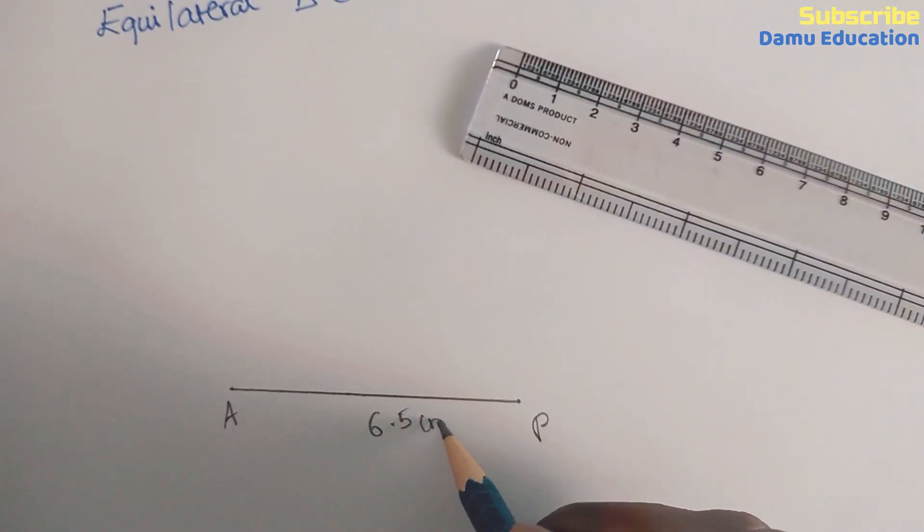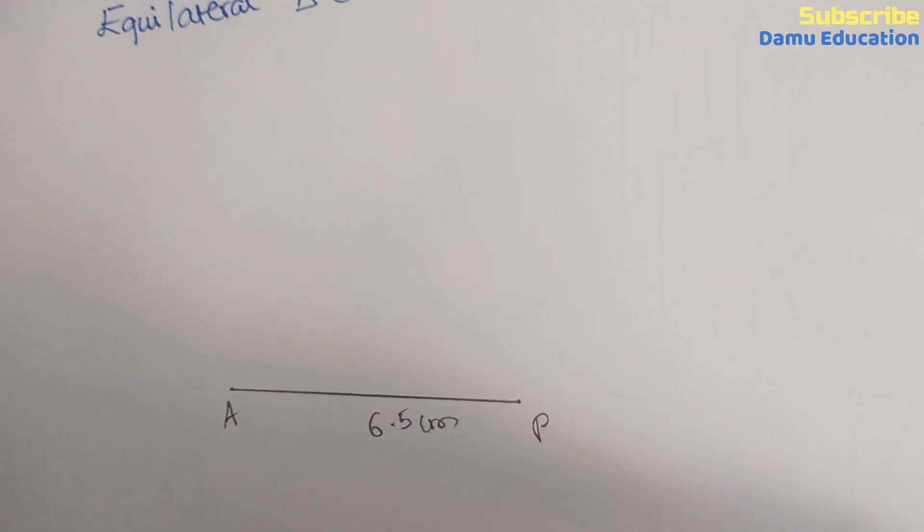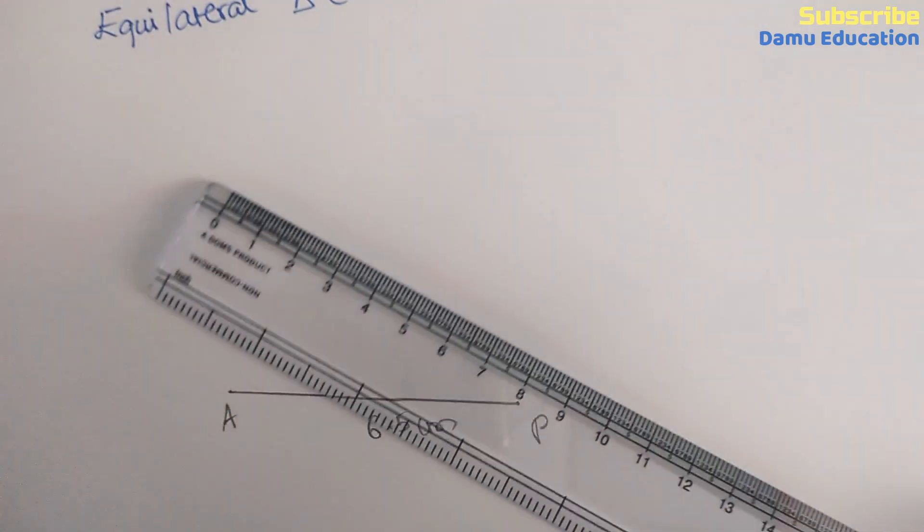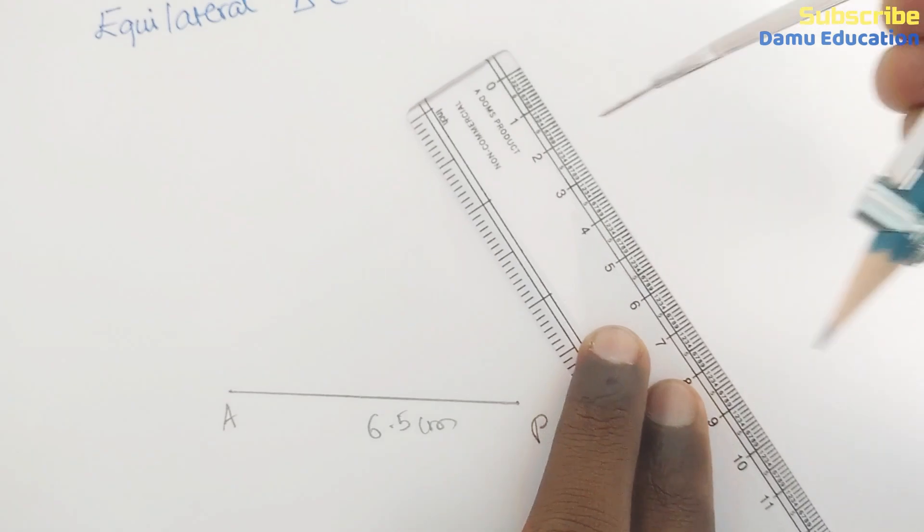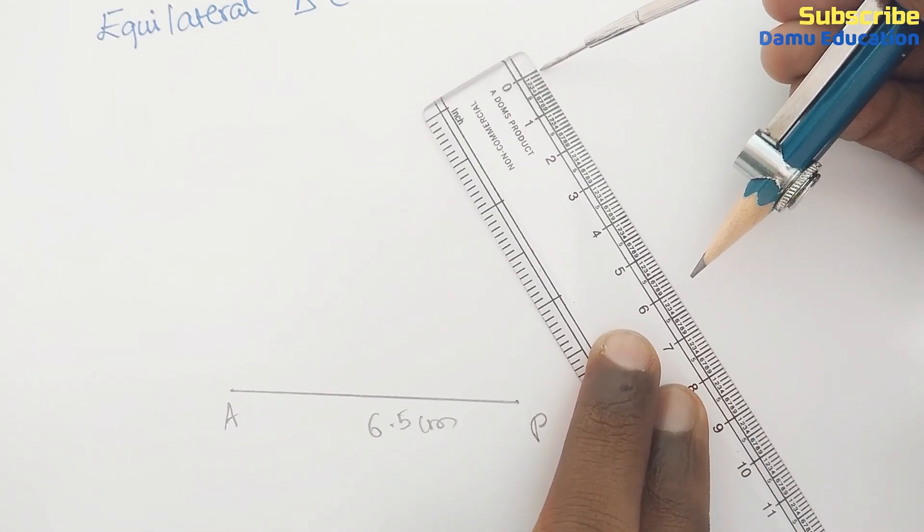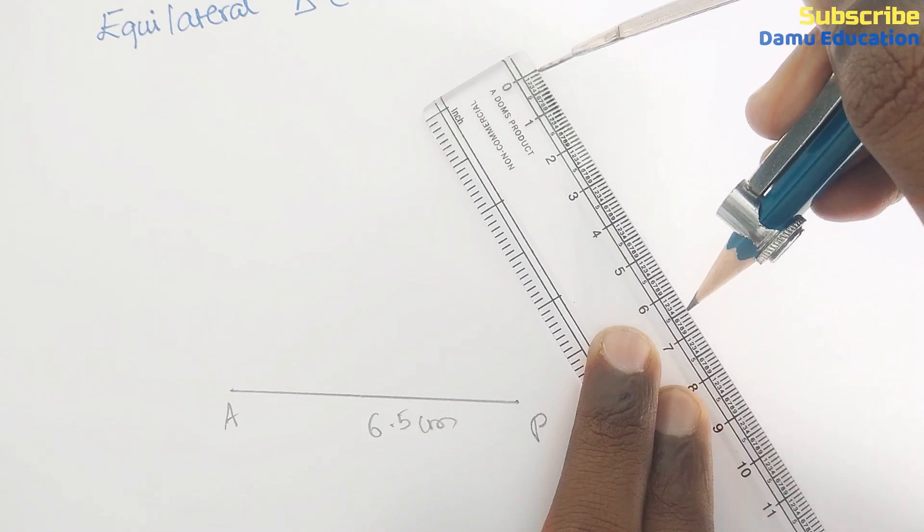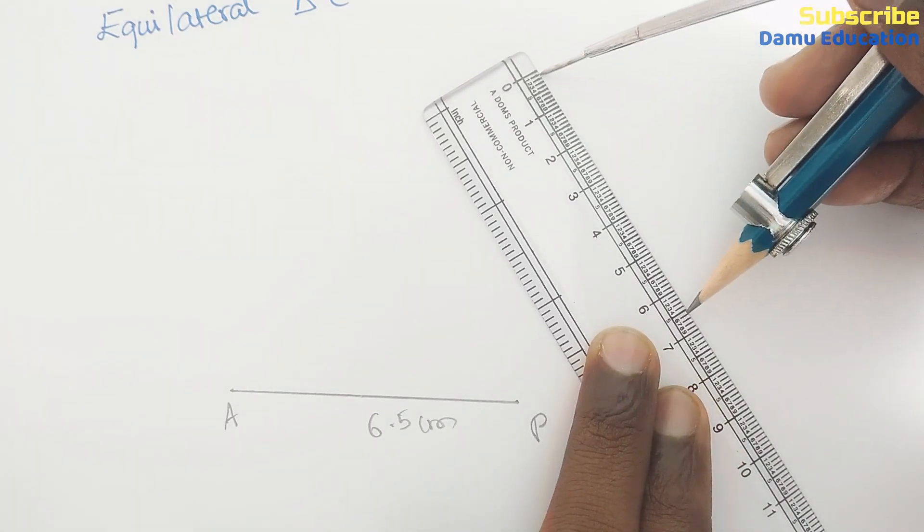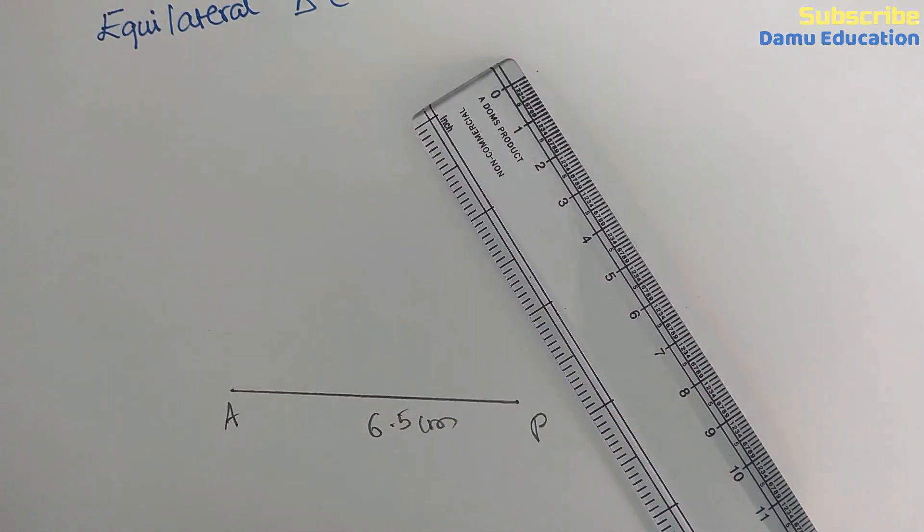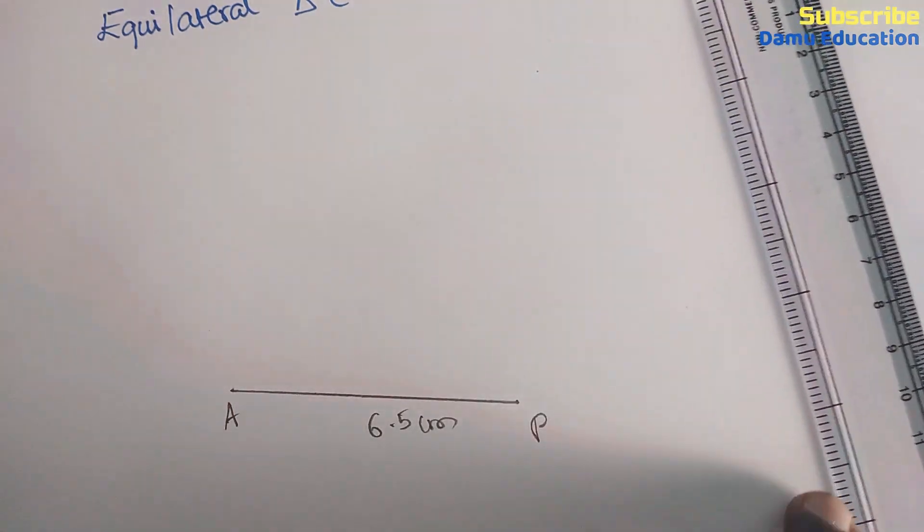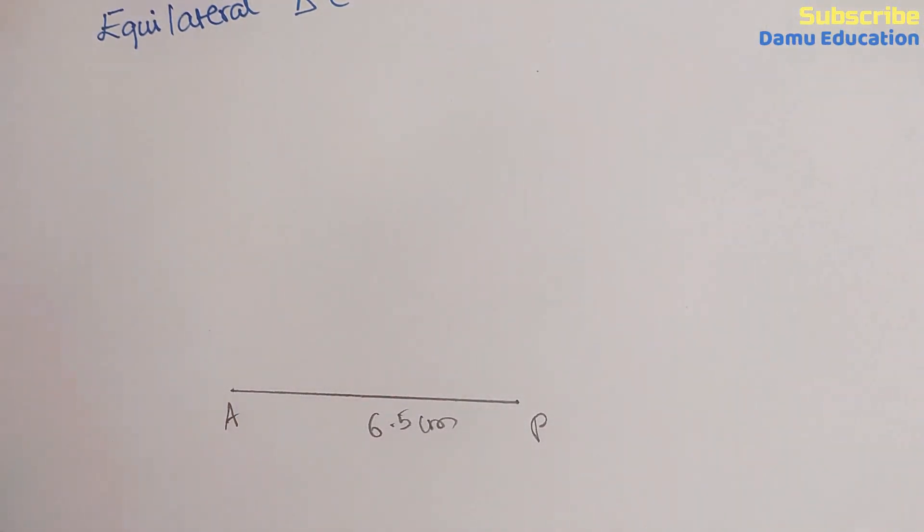Next, PE as a center with 6.5 centimeter - P as a center, draw an arc. Make sure like this, 6.5 centimeter. This is the length of 6.5 centimeter. P as a center, draw an arc like this.